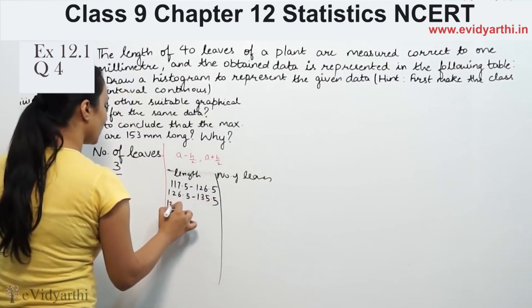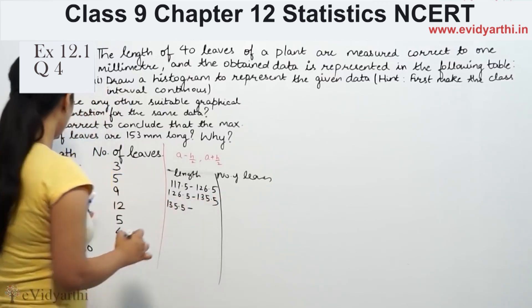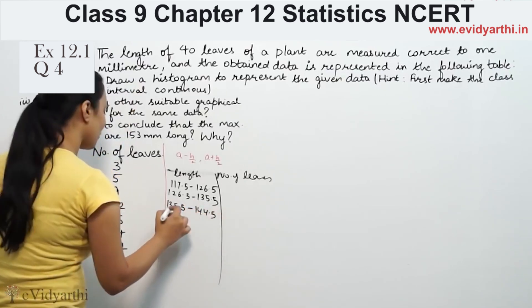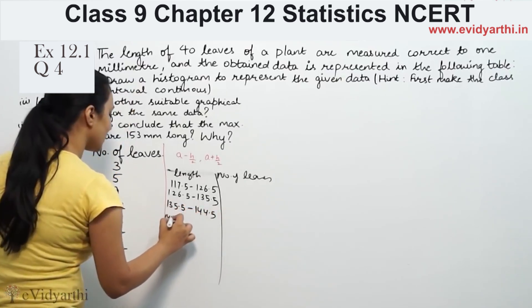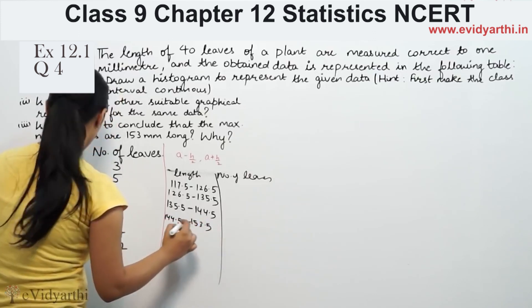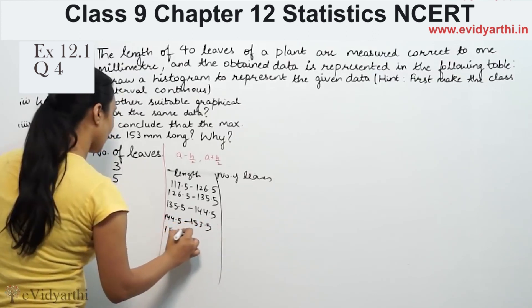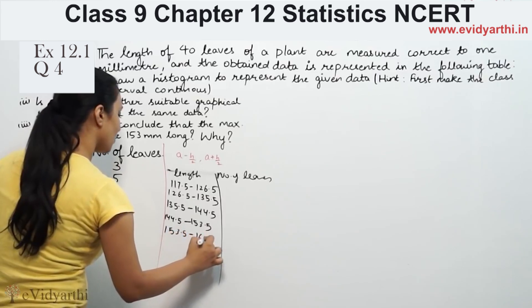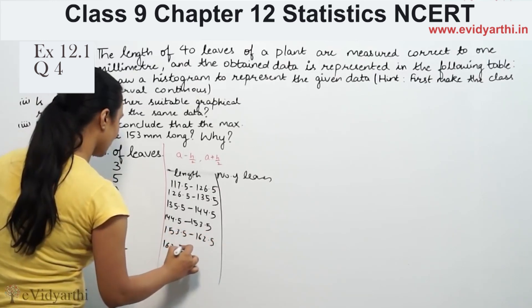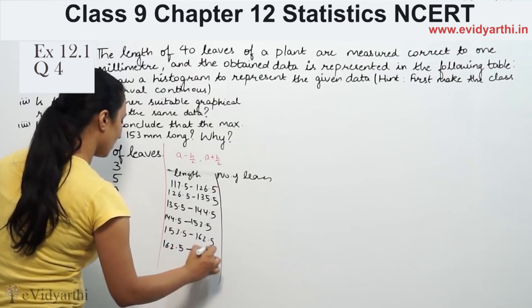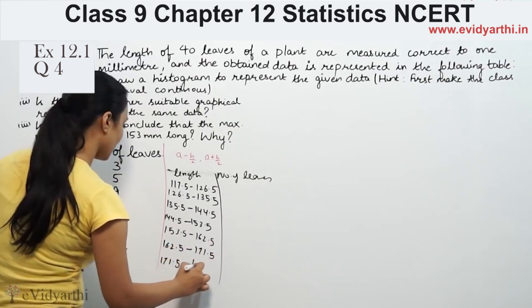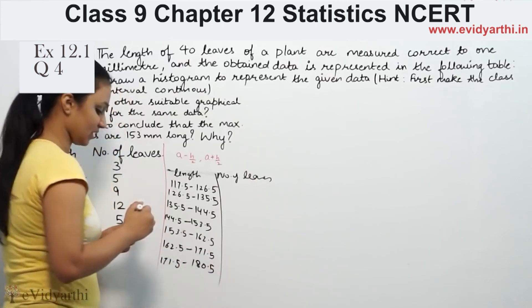The next interval is 135.5 to 144.5, then 144.5 to 153.5, then 153.5 to 162.5, then 162.5 to 171.5, and finally 171.5 to 180.5.